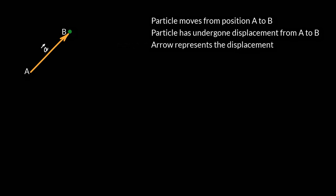So if a particle moves from position A to B, we say that it has undergone a displacement from A to B and we can show this displacement with an arrow pointing from A to B. You could say this arrow is a graphical representation of the displacement and we call it a vector.